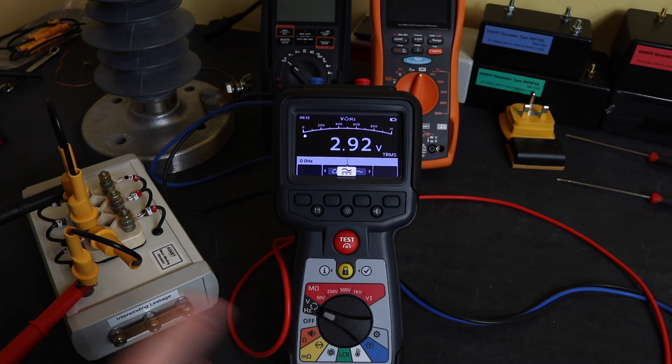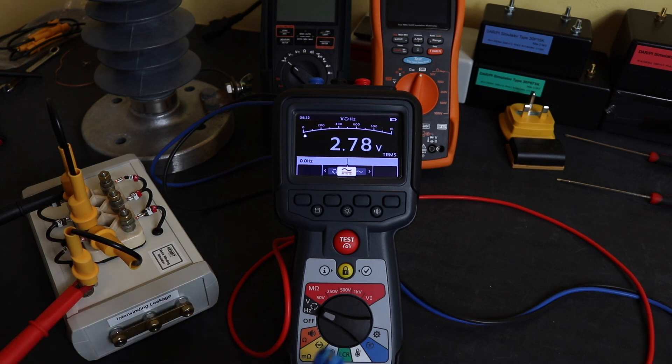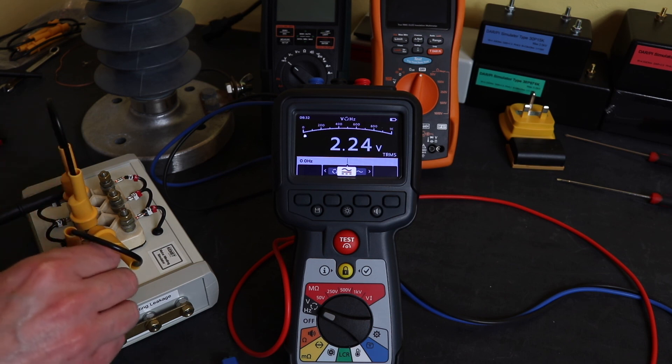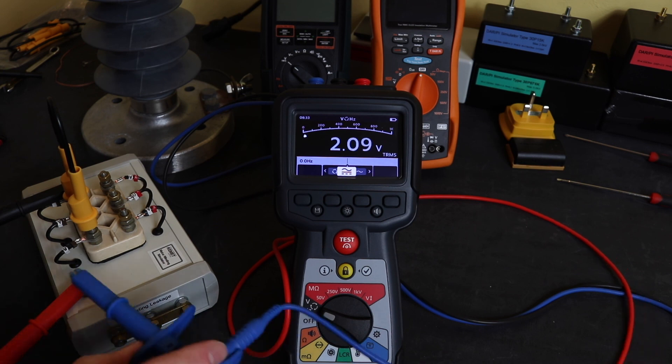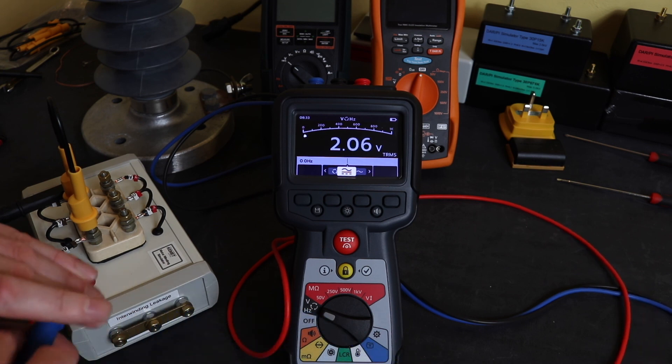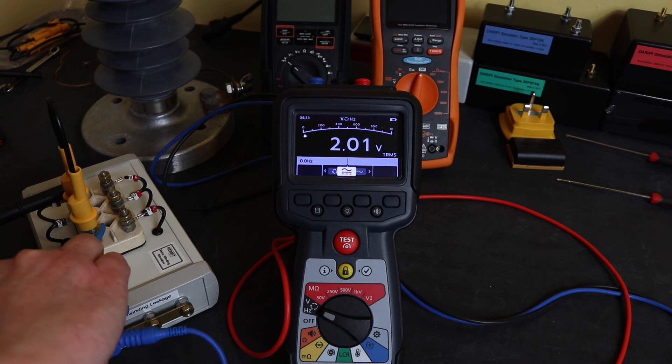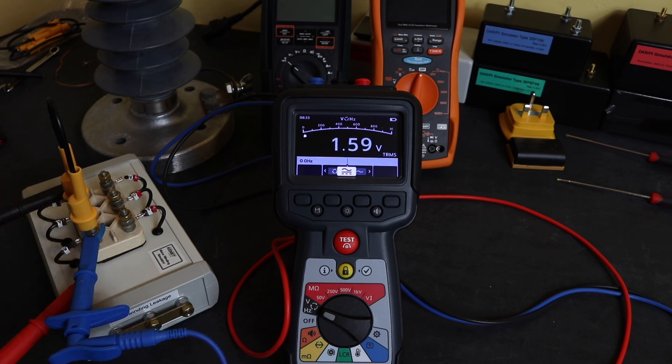With the circuit discharged, I'll now reconfigure this to use a guard terminal test which involves using this third lead. The guard terminal will enable me to remove leakage from this phase into the other two phases. I'll leave the two phases linked together and plug the guard terminal onto two phases.